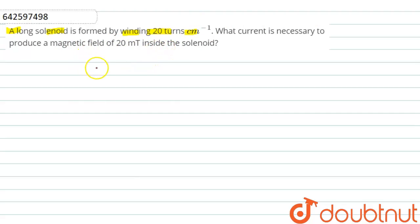So students, in this question it is given that B is equal to 20 millitesla and we can convert it. It will be equal to 20 into 10 to the power minus 3 tesla.